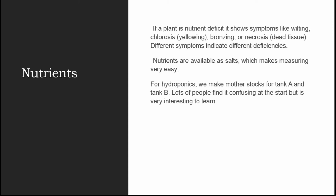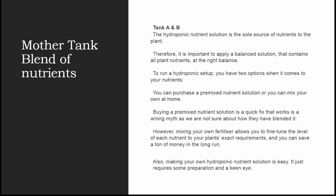Nutrients are available as salts, which makes measuring very easy for hydroponics. For hydroponics, we make mother stocks for Tank A and Tank B. Lots of people find it confusing at the start, but it is very interesting to learn. It's up to you what concentration you require for your mother tank — whether you use a 100-liter, 200-liter, 500-liter, or even 1000-liter mother tank for big farms.